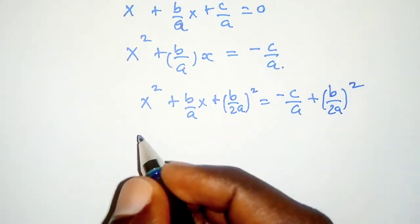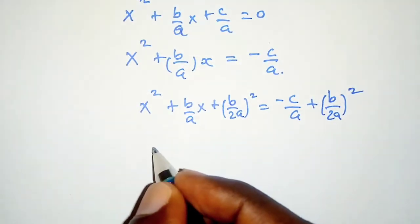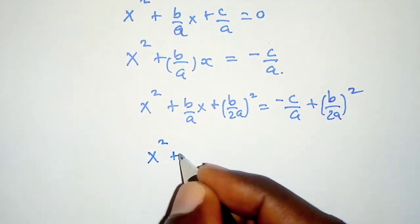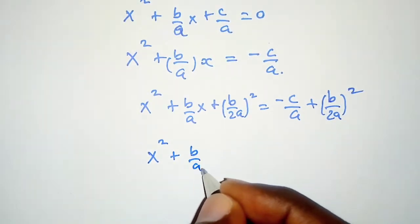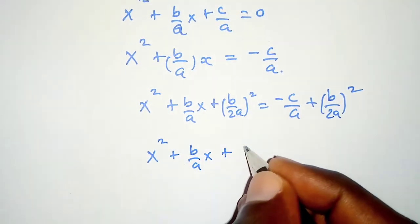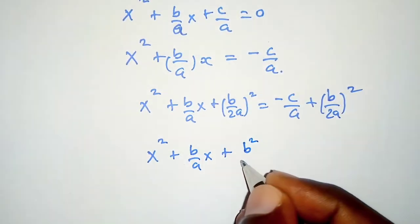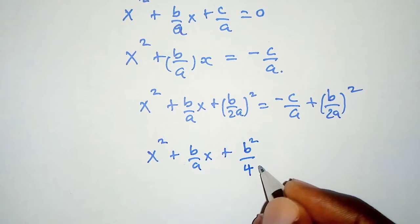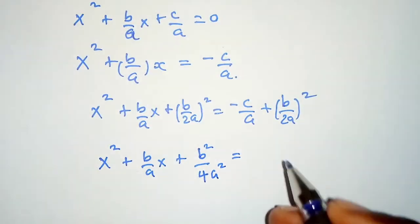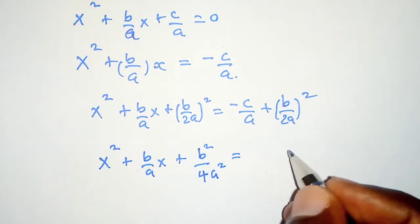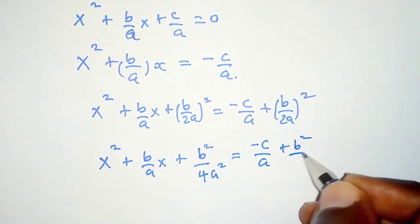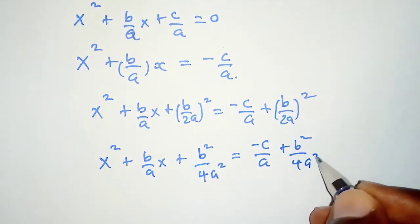Next, we have x squared plus b over a times x plus b squared over 4a squared equals, on the right hand side, negative c over a plus b squared over 4a squared.